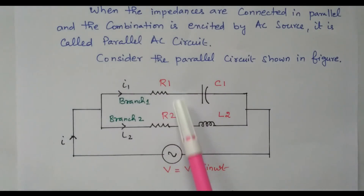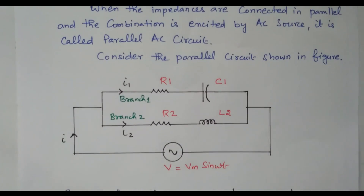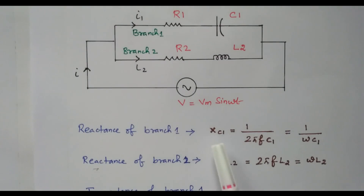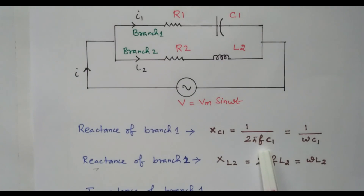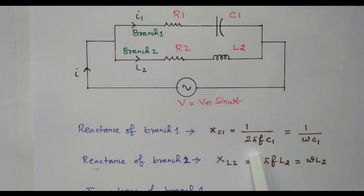We have two branches connected in parallel. Now we will see what is the reactance and impedance of these branches. Branch 1 has a resistor and capacitor; branch 2 has a resistor and inductor. The reactance of branch 1, Xc1, equals 1 divided by 2 pi F C1, because of the capacitor. This 2 pi can be written as omega, so that is 1 divided by omega C1.